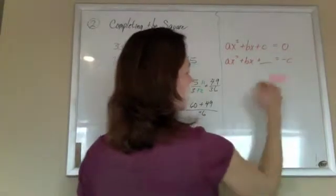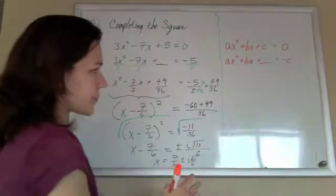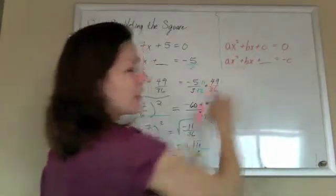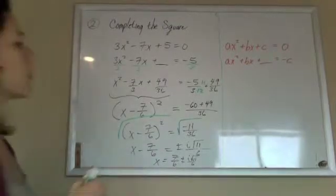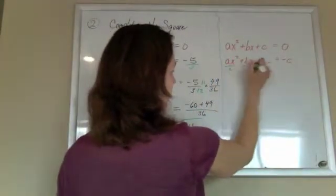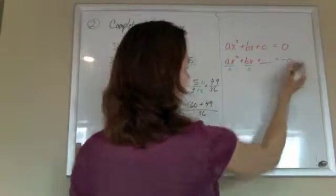Put something in his place so that we can create a perfect square. And again, I don't like that a in front of my x squared, so I'm going to multiply everybody by a.